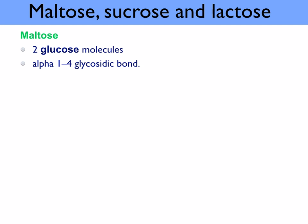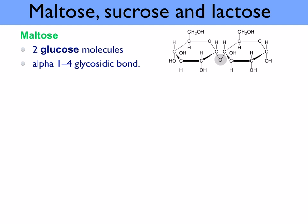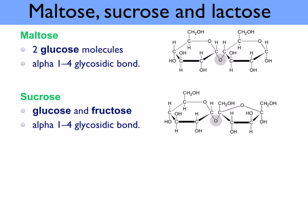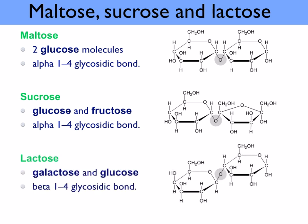There are three disaccharides to know. Maltose is formed from two glucose molecules and forms a 1,4 alpha glycosidic bond. Sucrose is formed from glucose and fructose, with an alpha 1,4 glycosidic bond. Lactose is formed from galactose and glucose, with a beta 1,4 glycosidic bond.